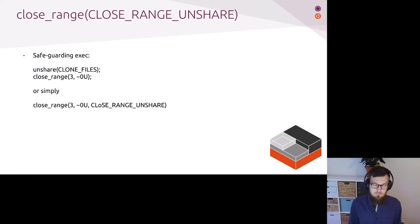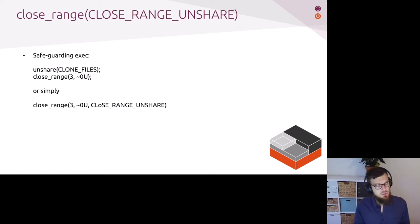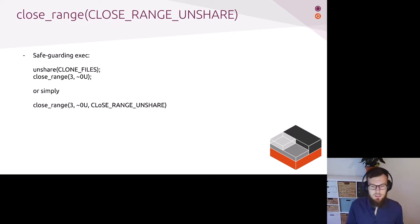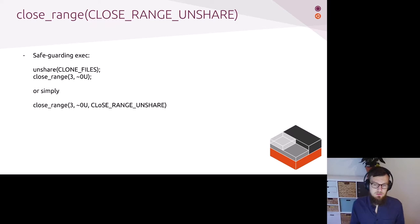One of the use cases close_range was designed for is to drop file descriptors just before exec. Usually this would be expressed in the sequence: unshare clone_files, then close_range on the range of file descriptors you want to close. This is one safe option to work around the problem that file descriptors are not close-on-exec by default. For a whole class of programs - daemons, service managers, programming language standard libraries, and container managers - having an internal method of closing all file descriptors is very helpful.